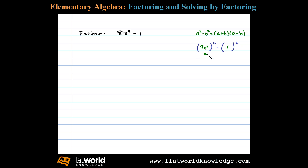Here a is 9x^2 and b is 1. We can then apply the difference of squares formula to factor this binomial as (9x^2 + 1)(9x^2 - 1). Now we're not quite done because I